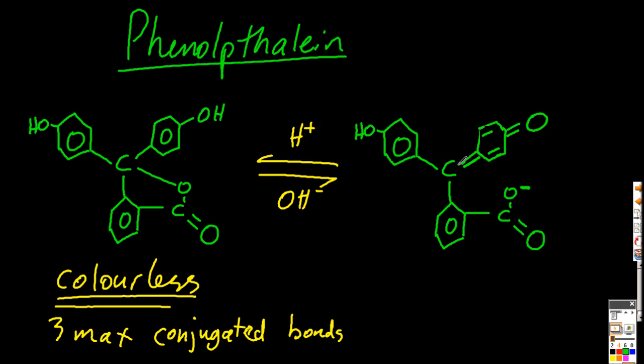And not only are there more conjugate double bonds there now, there's also some delocalization on this C double bond O, O minus group. So what does that mean? Well, it means it's absorbing visible light, and it looks purple.